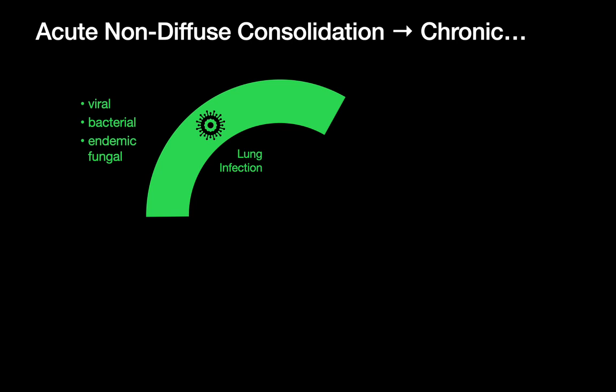When we look at lung infections, viral infections are unlikely to play out continuously over a chronic time frame. Bacterial infections — mycobacterial infections may, while other bacterial infections are probably less likely to play out over a chronic time course. Endemic fungal infections, however, can play out over a chronic time course. And if you look really hard, you may come across two uncommon bacteria: nocardia and actinomycosis, which are also lung infections that can play out chronically, though they're more uncommon than endemic fungal or mycobacterial infections.